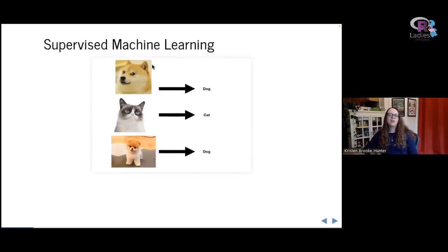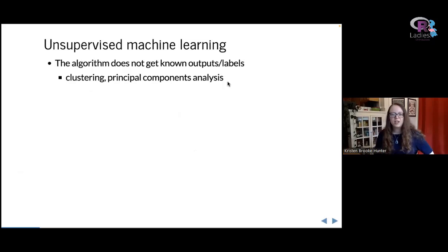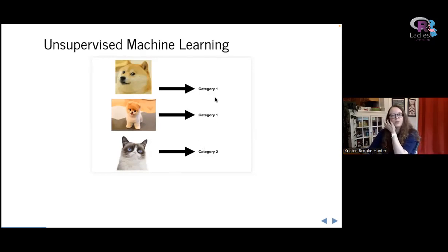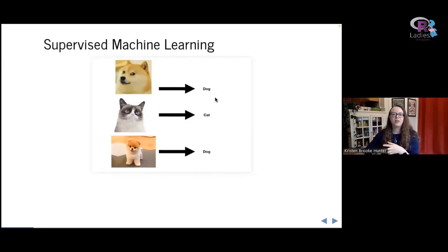For example, you might give it pictures labeled 'dog' or 'cat,' and then give it a new picture and ask whether it's a dog or a cat. Unsupervised machine learning is when you don't give it any known outputs or labels. Examples include clustering and principal components analysis. In that case, the algorithm just tells you 'these two pictures are in the same category' — without knowing what that category is — versus 'this picture is in a separate category.'